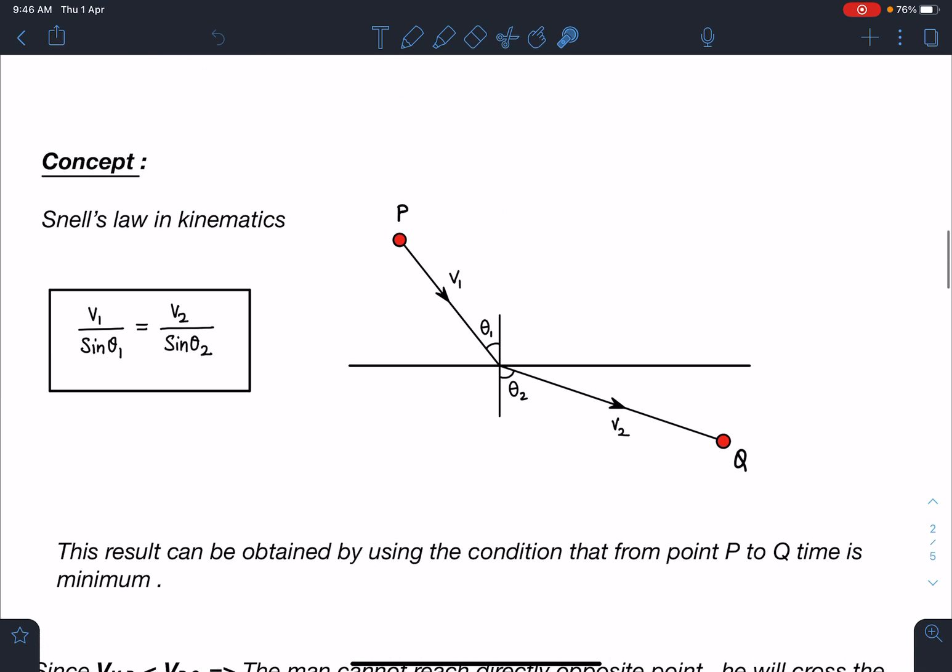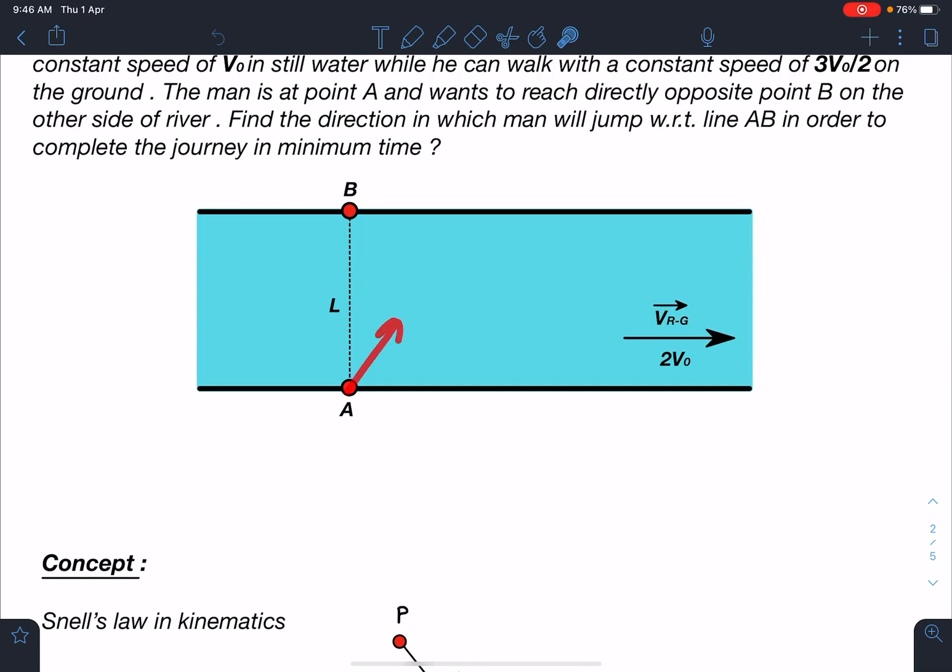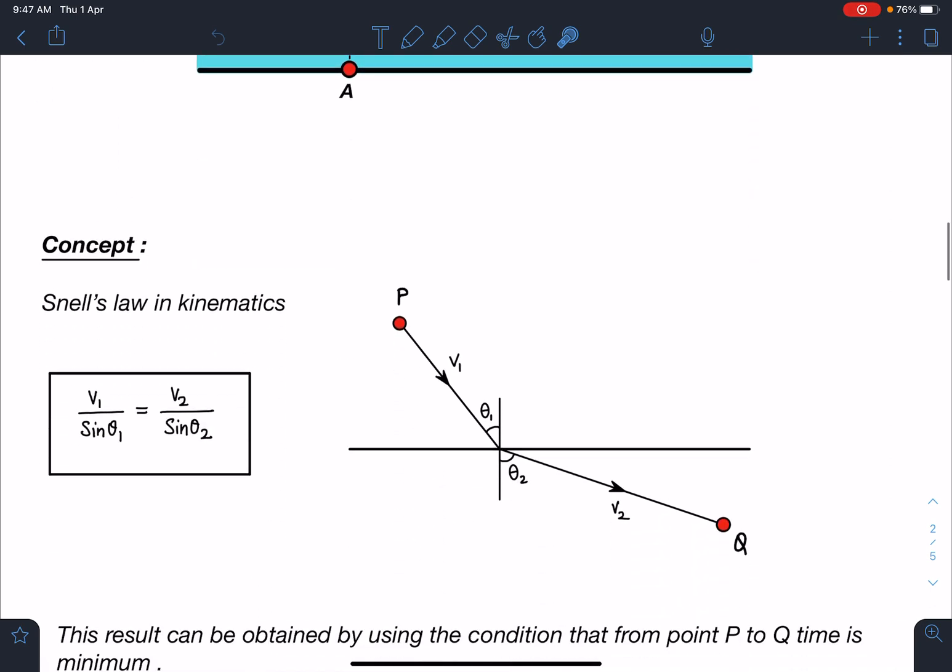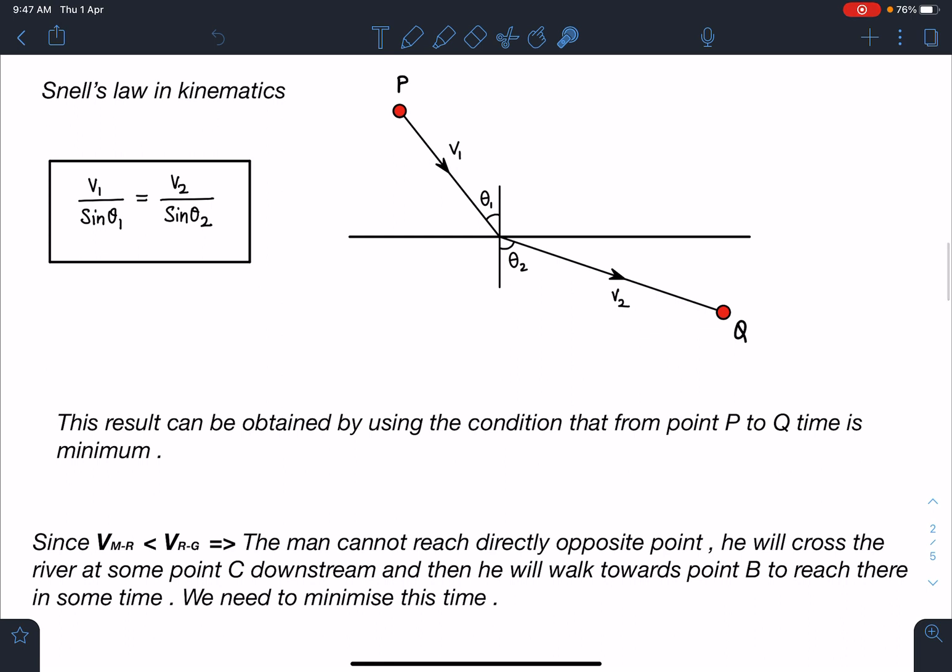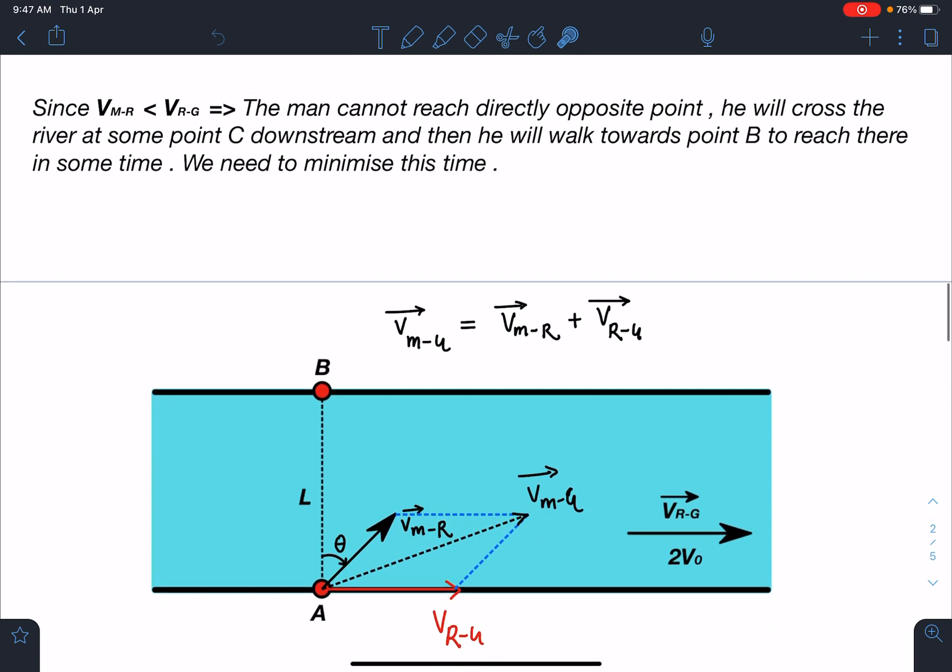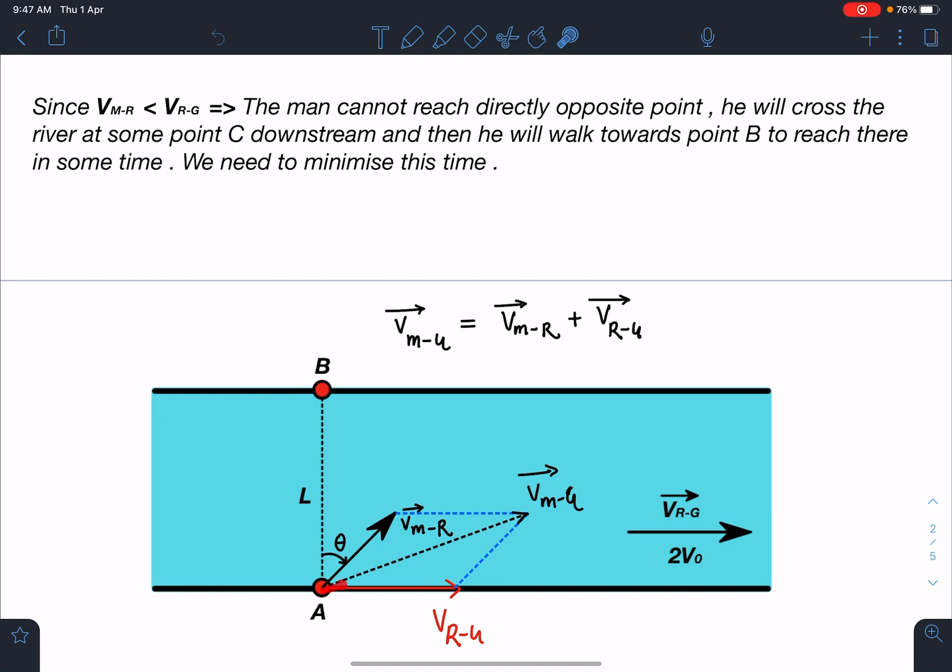Which we are not going to use, and that is you take some theta and add this velocity here, find the velocity with respect to ground, and man will reach somewhere here, then he will walk back. So write this time t₁ plus t₂, and then we can differentiate with respect to this angle theta: dt/dθ equal to 0. We will get that theta and corresponding time also we can calculate. However, by using Snell's law, this becomes very very easy. This is going to be the situation if we are trying to solve this problem by ground frame, and it's quite lengthy.